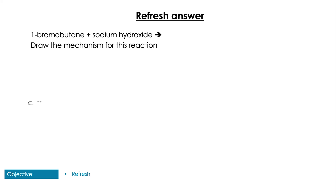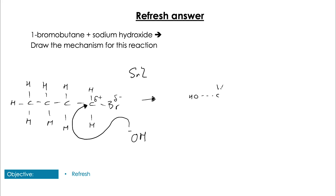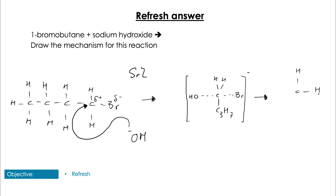Hopefully when looking at this one and drawing it out, you saw that it was a primary halogenoalkane. Primary, of course, is not going to be able to stabilize any carbocation intermediate, so we're going to have an SN2 reaction where the nucleophile, which in this case is the hydroxide ion, is going to attack the electron-deficient carbon bonded to the bromine. This is going to form our intermediate anion, which is going to have the long-range interactions of the OH and the Br before the Br finally leaves and gives us our product buten-1-ol.